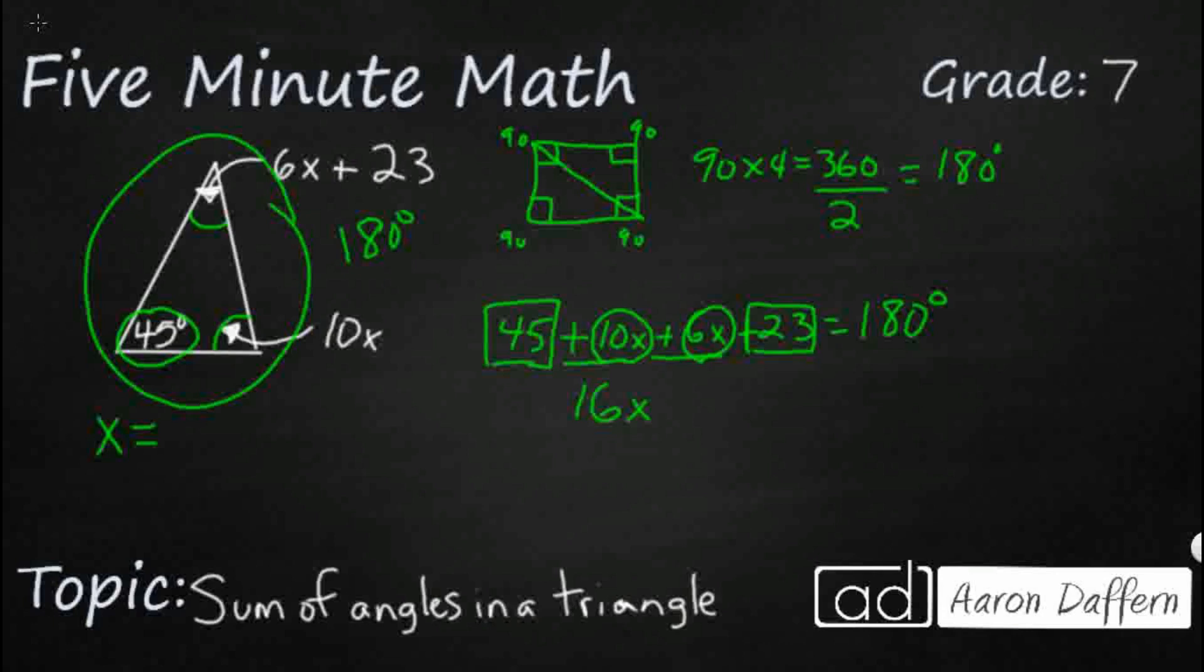So if I add 45 and 23, they're both positive, so I don't need to subtract anything. So I'll say 16x plus those together. That's going to be 68 equals 180.